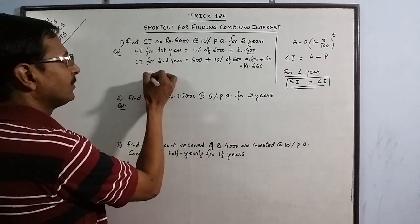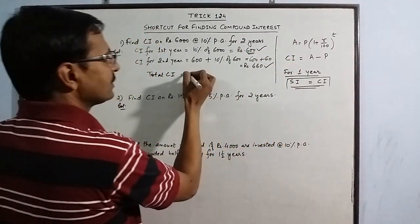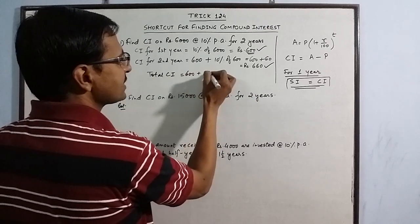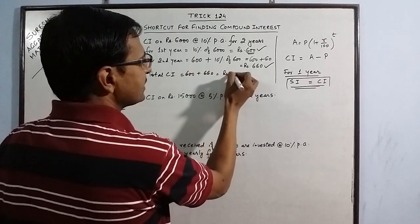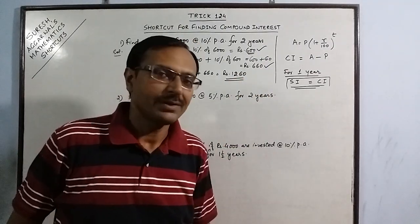The total CI, you can calculate just add the compound interest of the two years. This is 600 plus 660, Rs. 1260. 1260 is the answer for this question.